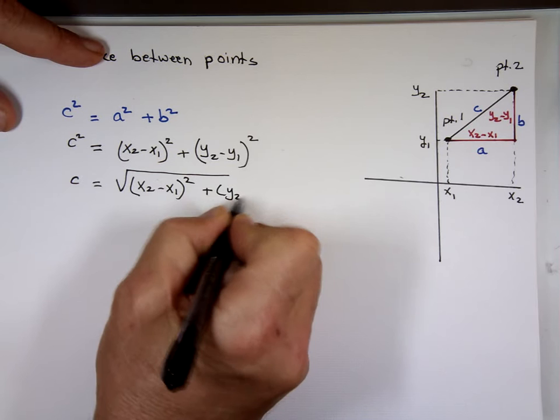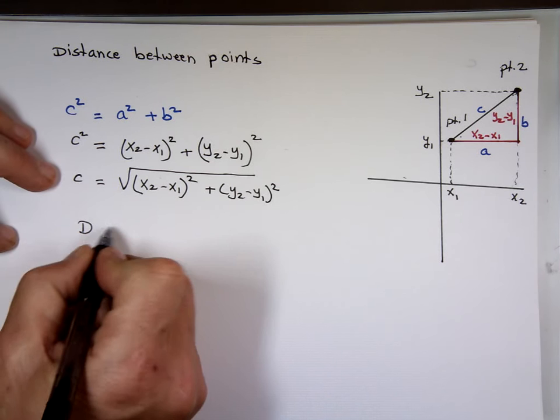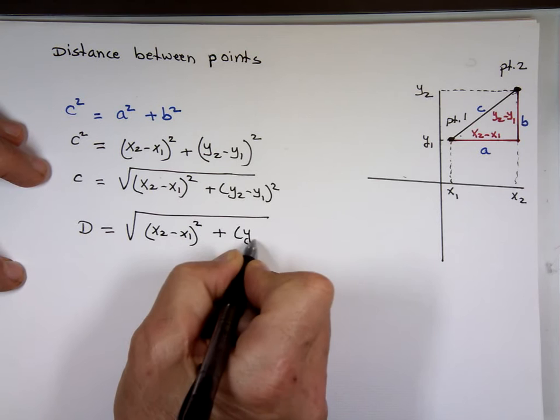Isn't C actually the distance between the two points? So that's the equation for the distance between two points. The distance is defined as the square root of (X sub 2 minus X sub 1) squared plus (Y sub 2 minus Y sub 1) squared.